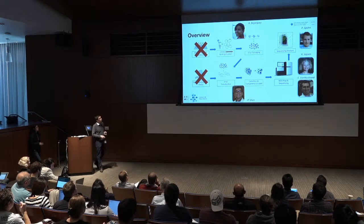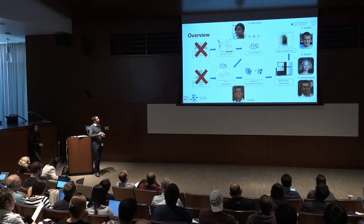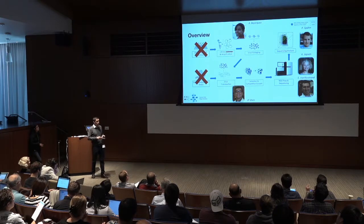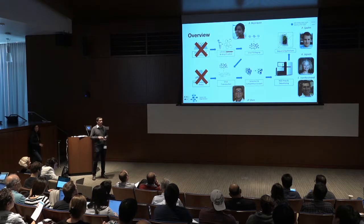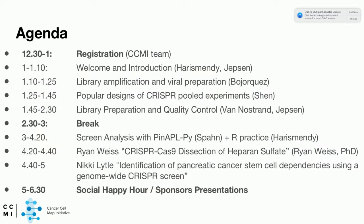The people talking to you today are: Anna Borocas, who will walk you through the wet lab part and viral packaging; JP Shen, who will present a number of different experimental designs in CRISPR screening; and Eric and Kristen, who will talk specifically about library preparation and high-throughput sequencing. Philip and I will walk you through the bioinformatics analysis. We'll have all the wet lab and library preparation before the break, and all the dry lab after the break.